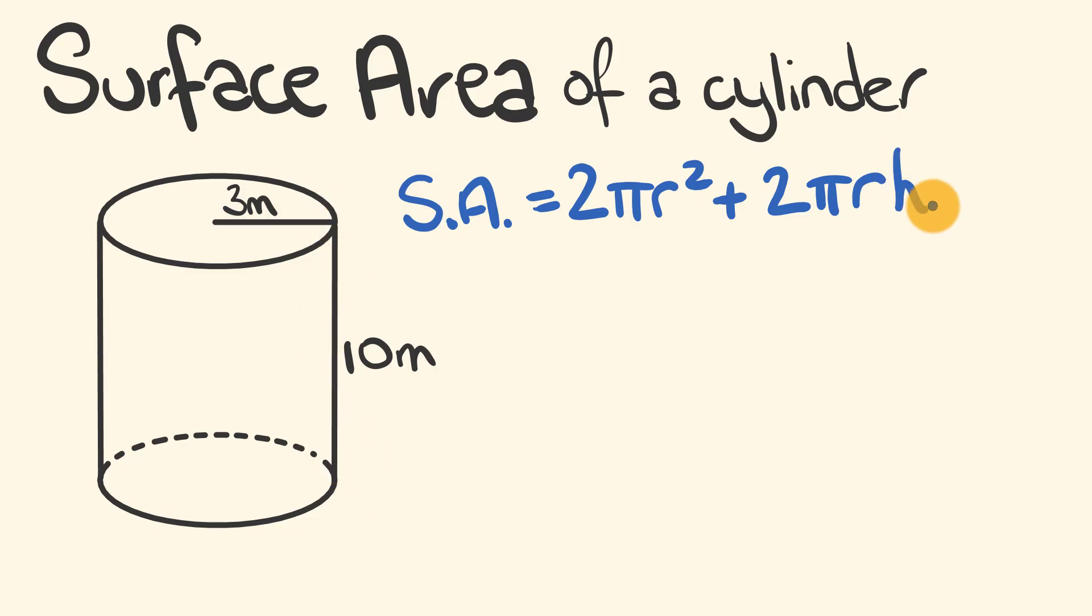So that's the formula we're going to use to solve the surface area of our cylinder. 2 pi r squared plus 2 pi r times the height. So let's substitute in some values now.